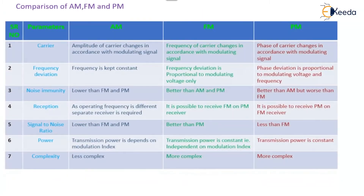Here the comparison is shown. The parameter we consider is the carrier. For Amplitude Modulation, the amplitude of the carrier changes in accordance with the modulating signal. In Frequency Modulation, the frequency of the carrier changes in accordance with the modulating signal. And in Phase Modulation, the phase of the carrier changes in accordance with the modulating signal.